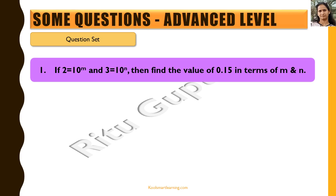Let's look at some questions for the advanced level based on exponents and powers. The first question says: if 2 is equal to 10 raised to power m and 3 is equal to 10 raised to power n, we need to find the value of 0.15 in terms of m and n.